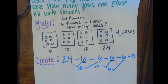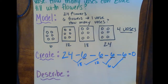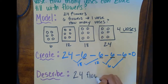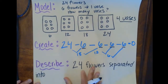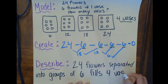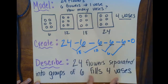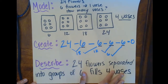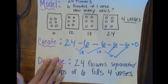Last, we need to describe our word problem. We start with the total number: 24 flowers, separated into groups of 6, fills 4 vases. Now it's your turn — get a word problem and model it, create the repeated subtraction equation, and then describe it in words. The description part will be a fill-in-the-blank. Good luck.